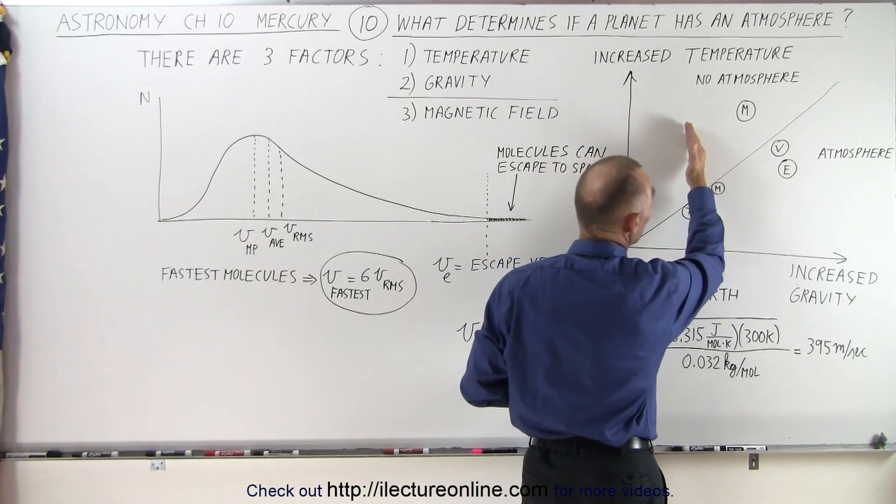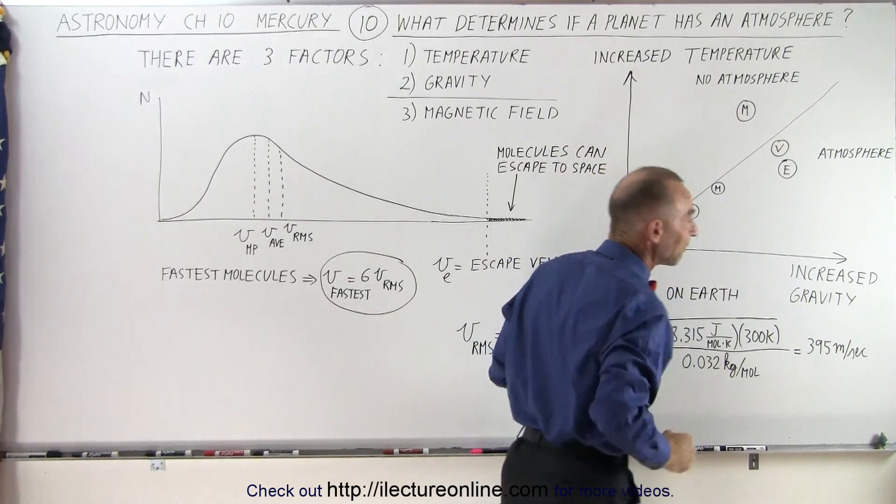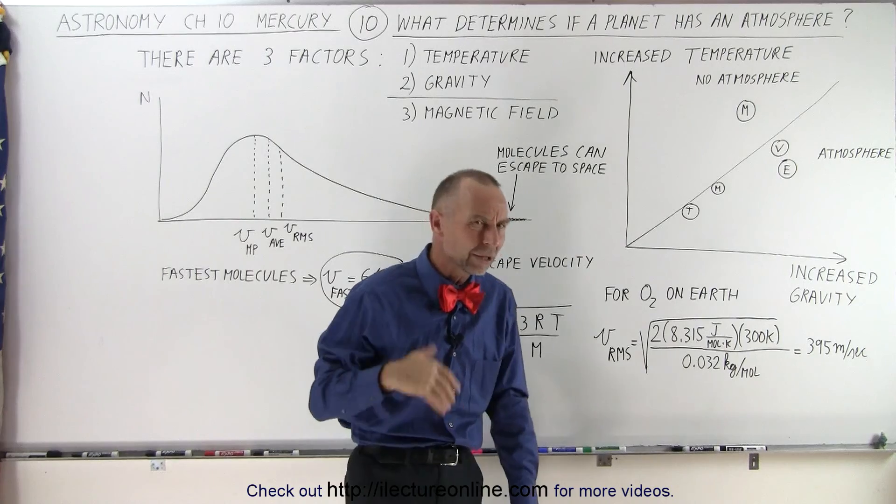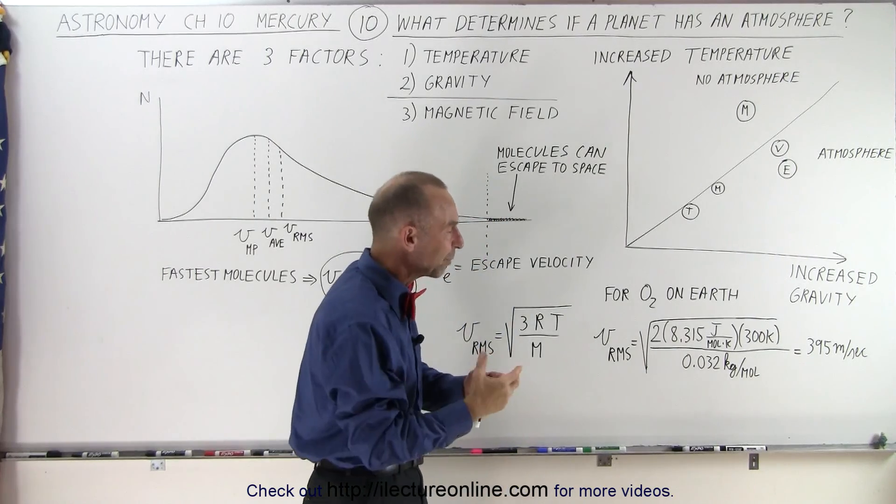Notice Mercury does not have a strong enough gravitational field, and therefore it does not have an atmosphere. Wait a minute, didn't you just say that Mercury has an atmosphere?